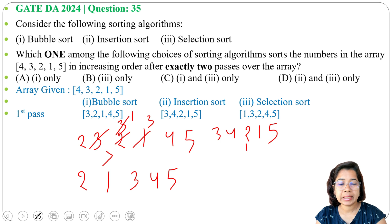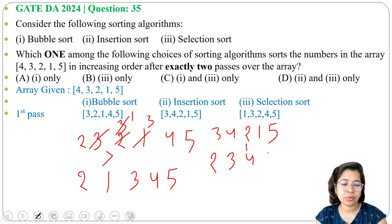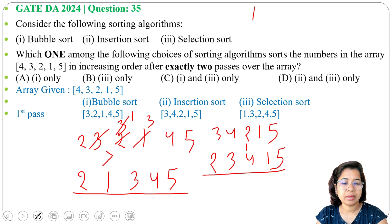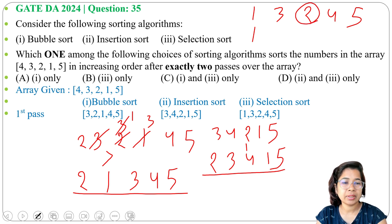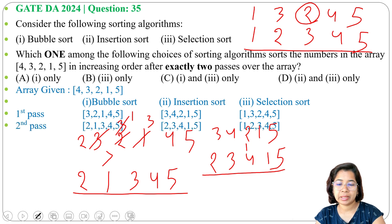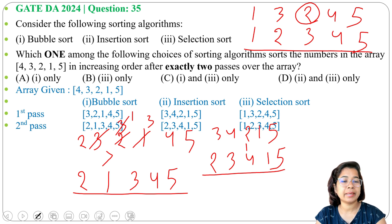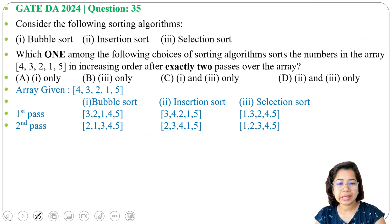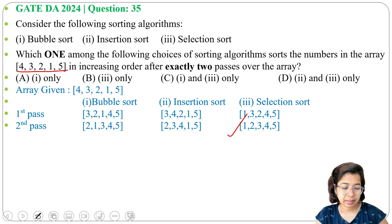For insertion sort pass 2 on 3 4 2 1 5: compare 2 with 4 — 2 is less, compare 2 with 3 — 2 is less, so 2 is inserted at the front giving 2 3 4 1 5. For selection sort pass 2 on 1 3 2 4 5: find the minimum of the remaining — minimum is 2, swap with position 2 — giving 1 2 3 4 5. After pass 2, selection sort has fully sorted the array.